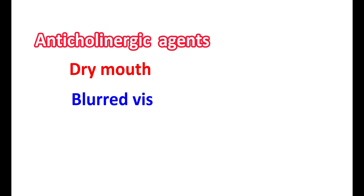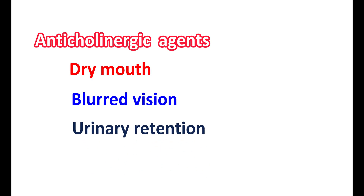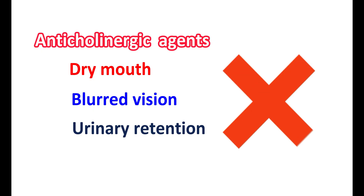Normally, anticholinergic agents can be used as antispasmodics as they produce relaxation of the smooth muscle. However, these anticholinergic medications can produce side effects like dry mouth, blurred vision and urinary retention. Such side effects are not observed with drotavarine, as this medication is not an anticholinergic agent.